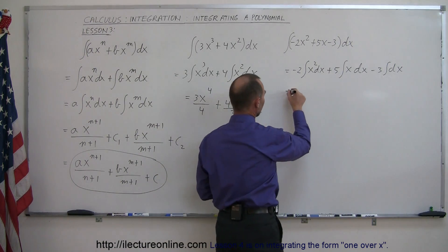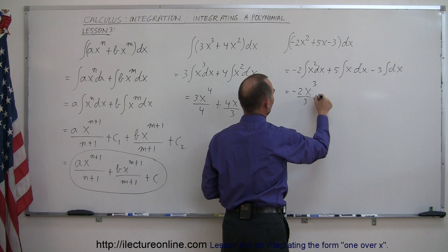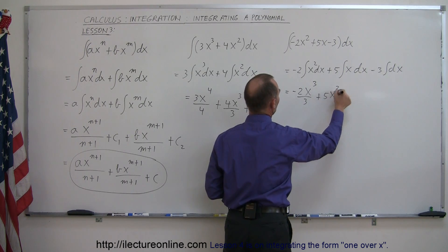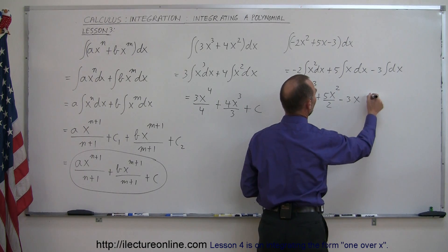We know how to integrate each one of those separately. This becomes minus 2x cubed over 3, plus 5x squared over 2, minus 3x to the first power over 1, which we don't have to write,